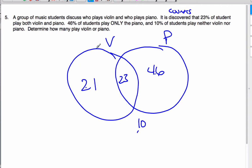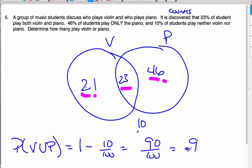And so, if I'm looking for how many people play violin or piano, well, violin or piano is going to be all the people in these regions here. And so, I add them all up, or I can subtract 10. That's the same thing as saying 1 minus 10 out of 100, which is actually going to be 90 out of 100, which is 0.9. And so, there's the introductory system of these complementary events. Thanks.